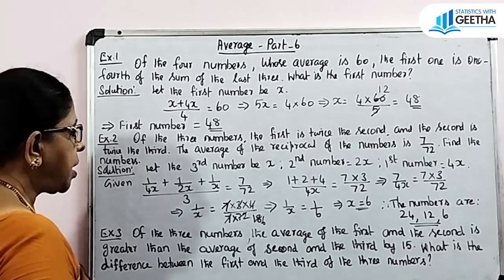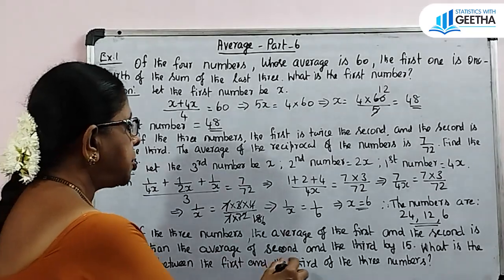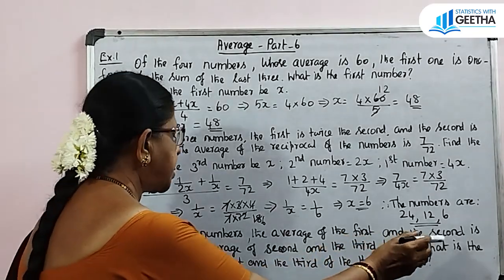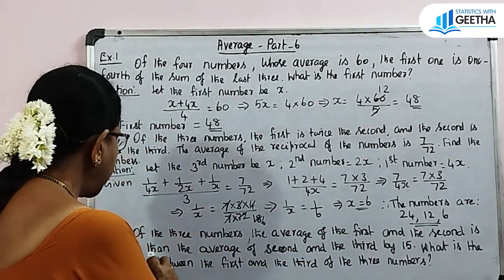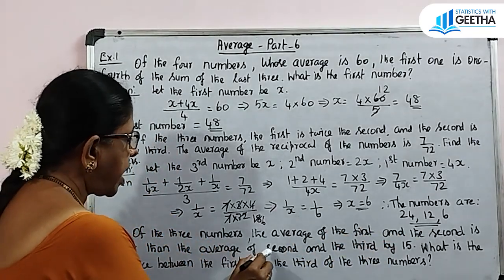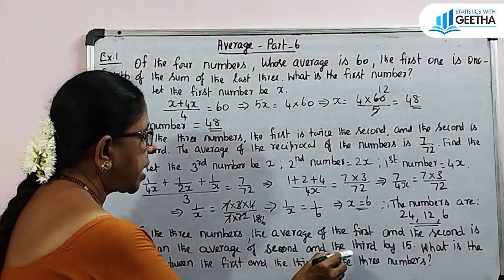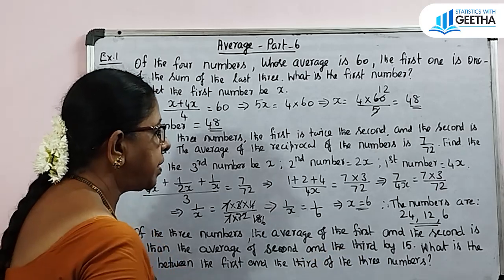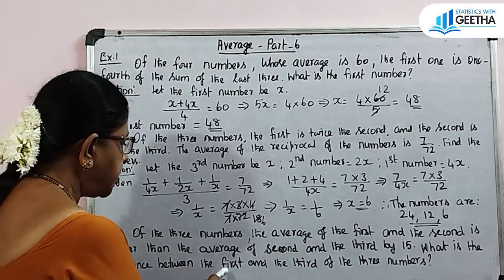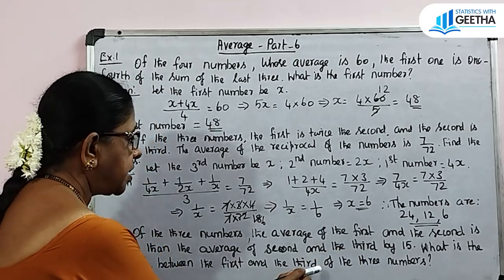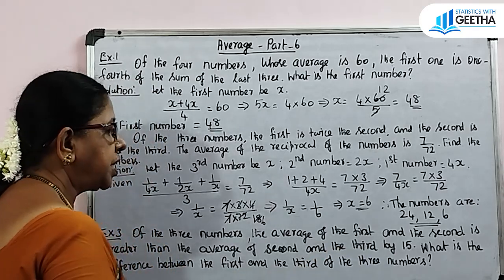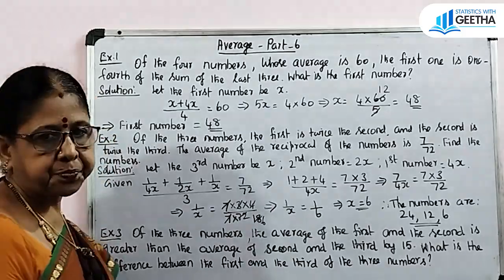Exercise number 3: Of the 3 numbers, the average of the 1st and the 2nd is greater than the average of the 2nd and the 3rd by 15. What is the difference between the 1st and the 3rd numbers?